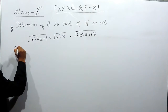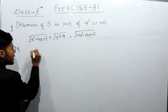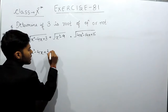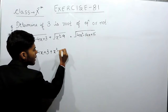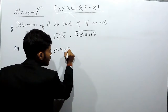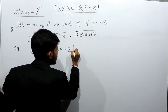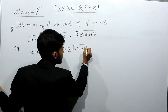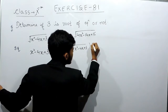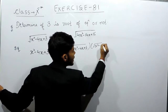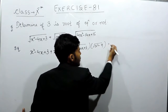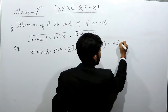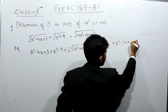So on squaring both the sides, this will be a² — that means x² minus 4x plus 3. This will be b² — that means plus x² minus 9, plus 2ab — which is 2 times under root of (x² minus 4x plus 3) and under root (x² minus 9) — equals to the right hand side after squaring: 4x² minus 14x plus 16.